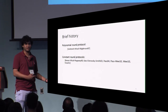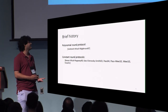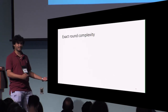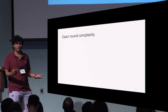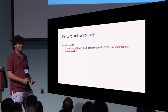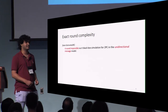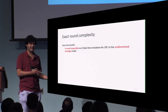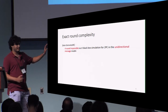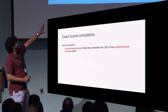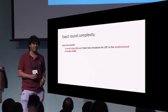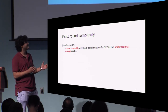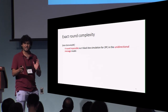We want to resolve the exact round complexity of MPC, so we want to do better than constant. Do we know of lower bounds? An important result by Katz and Ostrovsky showed that fewer than four rounds is impossible with respect to black-box simulation. The caveat is that the communication channel is the unidirectional message model, which is unique to the two-party setting.